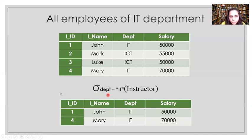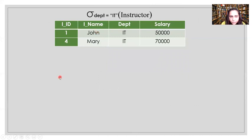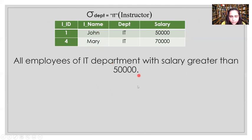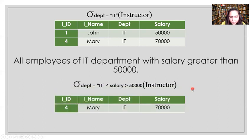You can also combine multiple conditions with the select operation. For example, to find employees from the IT department with salary greater than fifty thousand, you write: sigma subscript (department = IT AND salary > 50000) of instructor. The upward-pointing symbol represents AND, and if inverted it becomes OR. Here, only Mary has a salary above fifty thousand in the IT department, so the result is a single row — Mary with a salary of seventy thousand.